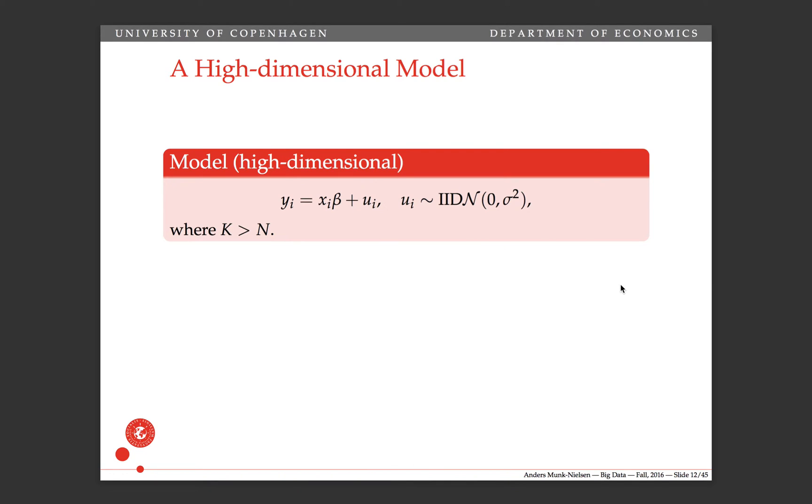A high-dimensional model might, for example, just be our standard linear model with Gaussian innovations where the dimension of x is greater than the number of observations. There's an important distinction between what happens asymptotically. If k is fixed, then the problem is simply how do we find the betas given the data that we have, but asymptotically is a completely different thing because eventually n will become much larger than k, even though k starts out very small.